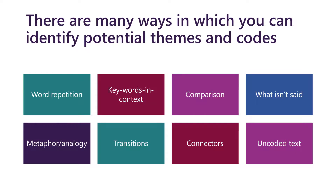There are many ways in which you can identify potential themes and codes. You can look for the repetition of words, look at how keywords appear in context, identify them through comparison of different sources, by looking at what isn't said, by looking for metaphors and analogy, looking at transitions, connections, and uncoded text.